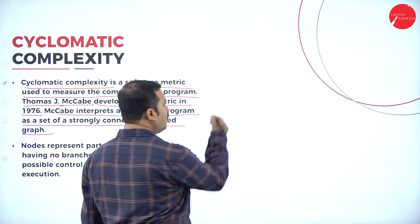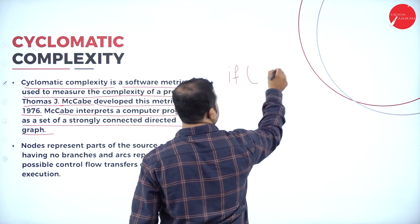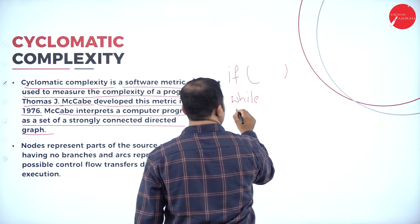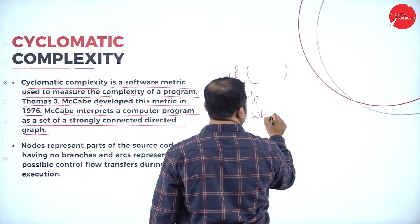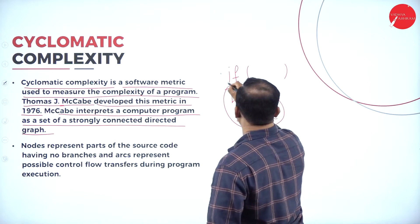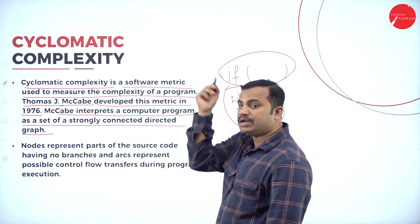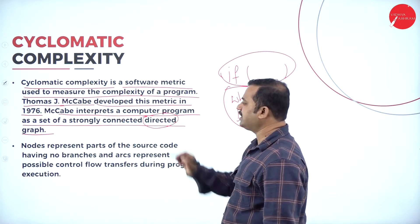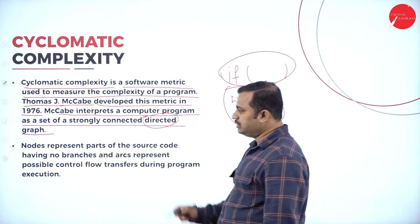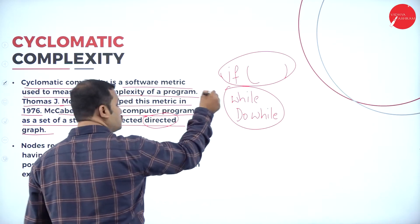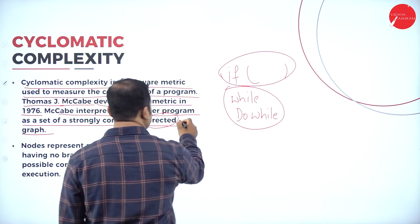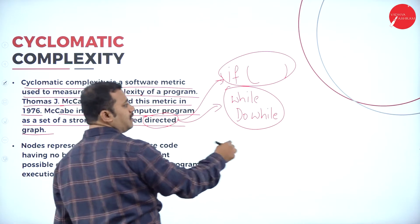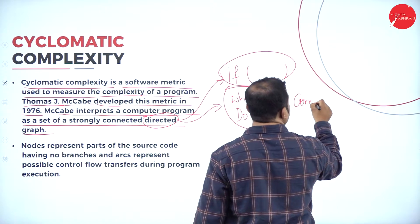All conditional statements like if, while, do-while, and all these kinds of iterative and conditional statements are going to be represented in the form of a directed graph. The purpose of defining a program in terms of a directed graph is to obtain the complexity of that program.